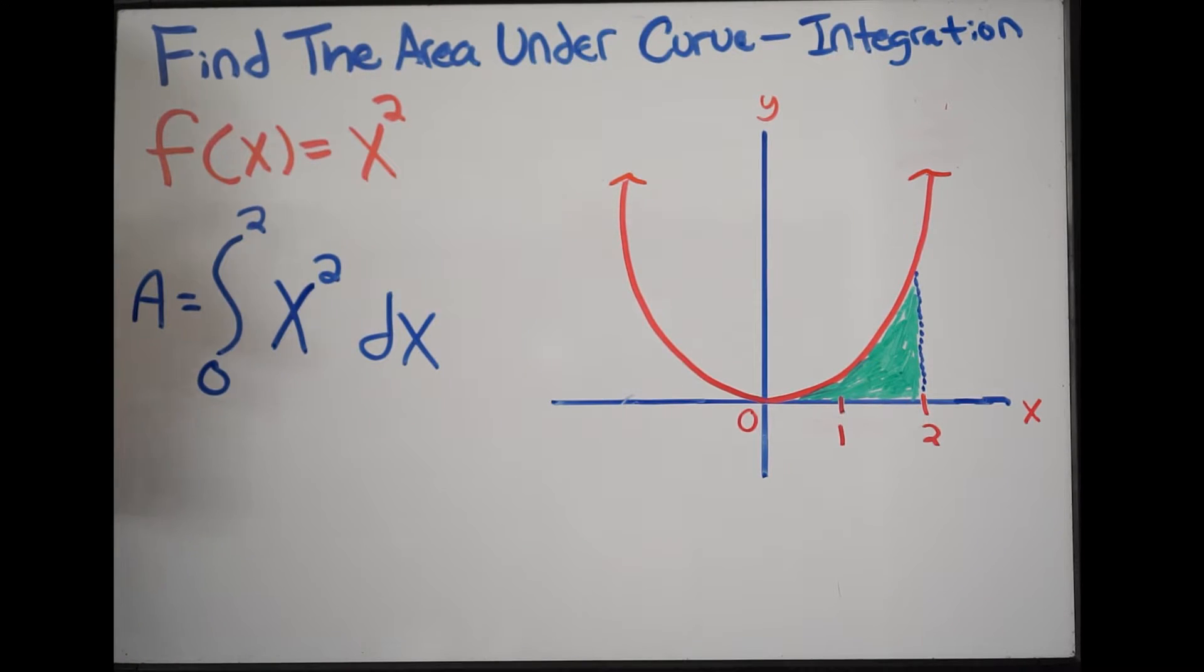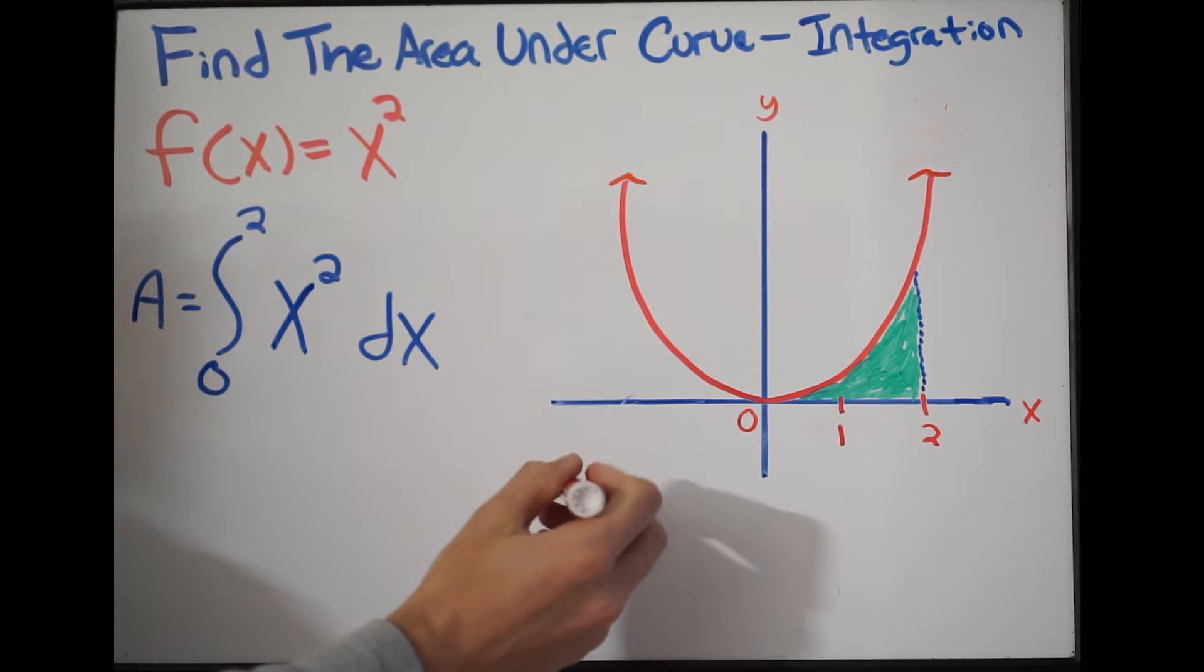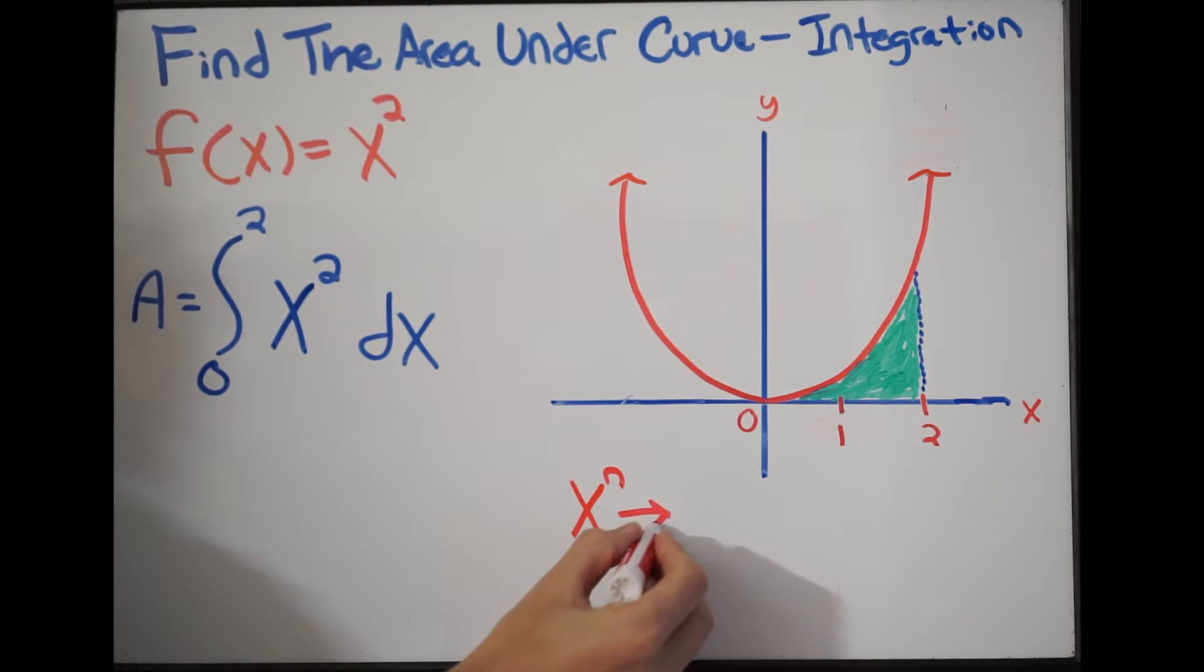So we have to integrate. How do we do that? Remember the rule when we're using integration, and this goes back to the fundamental theorem of calculus. If I have x to the n, I need to take the antiderivative so that I can integrate. And when you take the antiderivative, it's going to look like this: you'll have x to the n+1 over n+1. That's going to be the antiderivative.